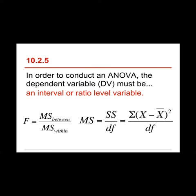As shown in the formula, the statistic is F and you use the mean squares. On the right side you can see that to calculate mean squares you have to calculate a mean, and you can only calculate the mean for an interval or ratio level variable — the quantitative ones. That's the answer for analysis of variance, and that's the end of the second quiz.